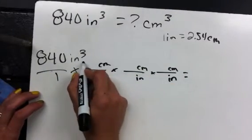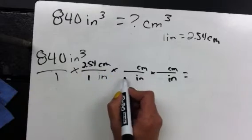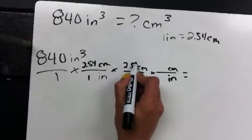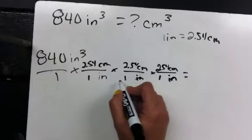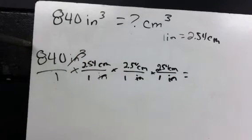So now we just fill in. One inch is 2.54 centimeters. One inch is 2.54 centimeters. And one inch is 2.54 centimeters. So we're going to cross off our labels, and we're going to take our 840 times 2.54 times 2.54 times 2.54 equals.